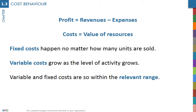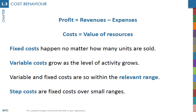Costs are variable or fixed over a certain range, what is called the relevant range. For example, the cost of one internet server is fixed. However, if traffic increases significantly, one server is not enough and you need a new one. With two servers, the fixed cost doubles. These are called step costs. Notice that when a small range of activity is considered, the step cost behaves as a fixed cost.